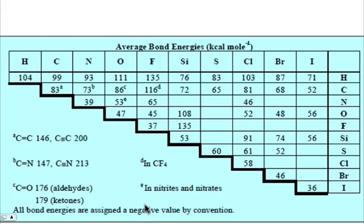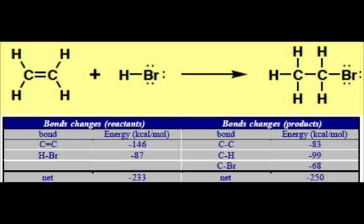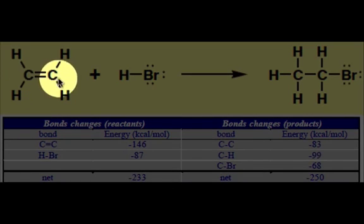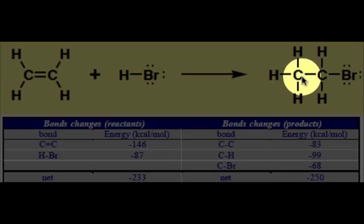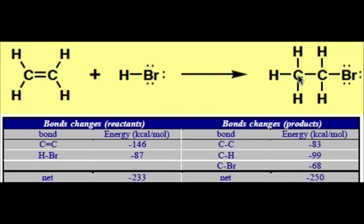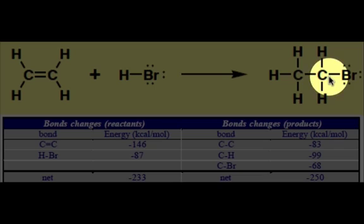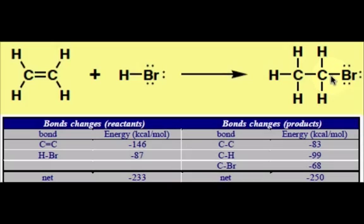So how can we use this table to help us in our bond enthalpy calculations? Let's show an example. What you do is you count up all of the bond changes in the reactants and in the products. For example, we have this carbon-carbon double bond reacting with HBr to form this carbon-carbon single bond, and the elements of HBr are added across that double bond. One hydrogen is added to the carbon, and the bromine is added to the other carbon. So we can calculate whether this particular reaction is favorable or unfavorable based on bond enthalpy calculations.